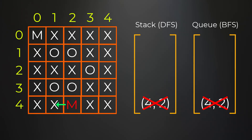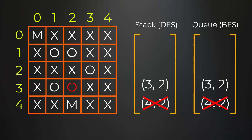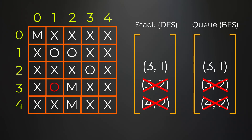From position (4,2) we check all neighbors: left and right are X's, below is out of bounds, but above is another O. If using DFS we make further recursive calls; if using BFS we add the coordinate to our queue. We move to position (3,2), flip it to M, continue searching — top and right are X's, below is already M, left is another O.